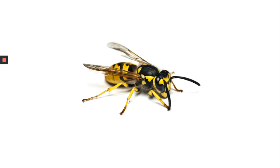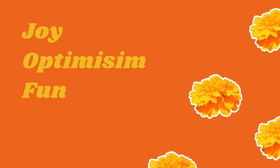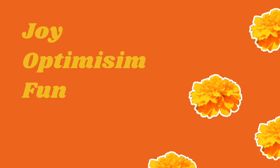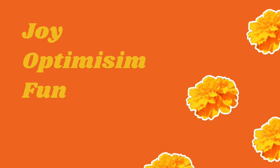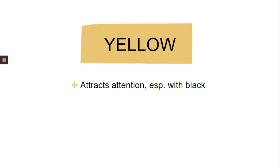Yellow, just like red, is very bright and attracts attention — especially with black. That is why factory or construction workers have yellow and black uniforms, which signal caution. Another meaning of yellow is derived from nature: it is the color of the sun, summer and sunflowers, so we perceive it as joy, optimism and fun. Just make sure you choose an appropriate background color to make it pop. Golden yellow signals status because of its association with gold, so yellow attracts attention mostly with black, while golden yellow signals status.